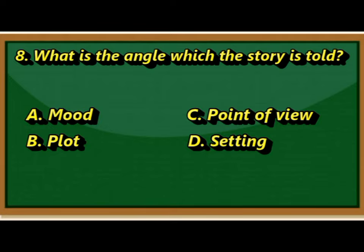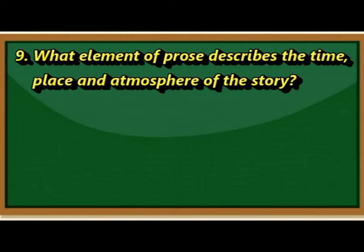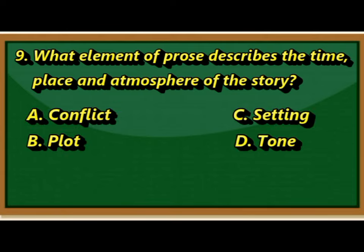Number nine, what element of prose describes the time, place, and atmosphere of the story? A, Conflict. B, Plot. C, Setting. D, Tone.